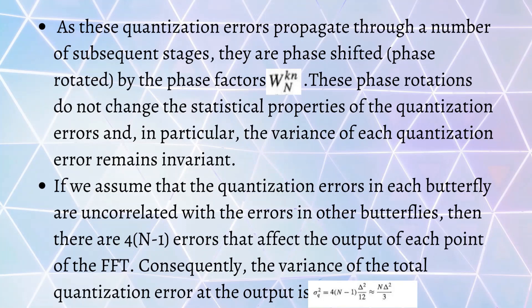This W_N will be the twiddle factor. These phase rotations do not change the statistical properties of the quantization error. In particular, the variance of the quantization error remains invariant. If we assume quantization errors in each butterfly are uncorrelated with errors in other butterflies, then there will be 4(N-1) butterflies that affect the output of each point of FFT.